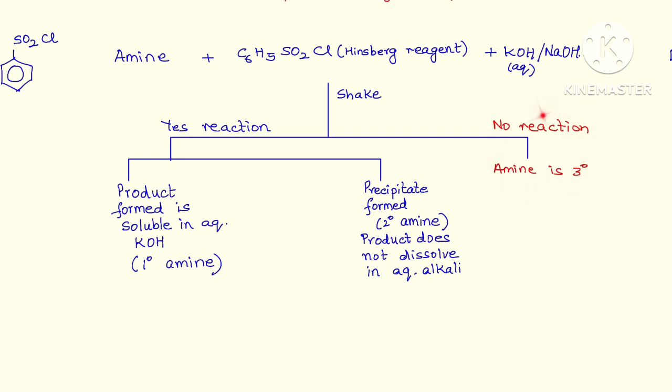If there is no reaction, then your amine is a tertiary amine, a 3 degree amine. Because tertiary amines will not show any reaction with Hinsberg reagent, and hence even in the presence of an alkali there is no reaction.